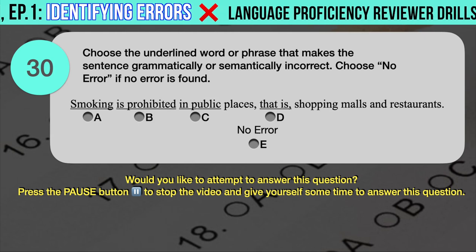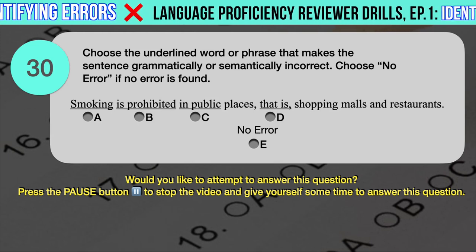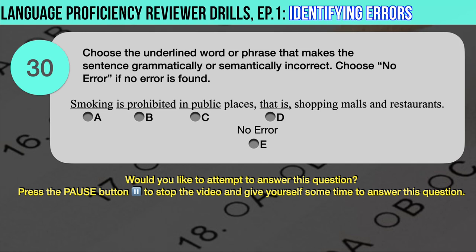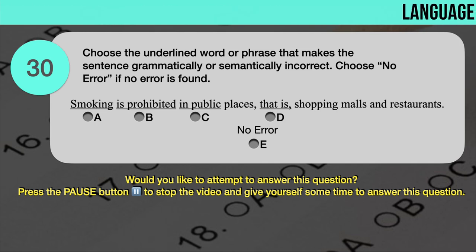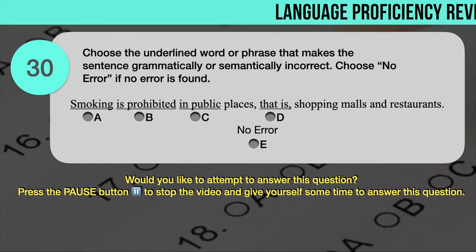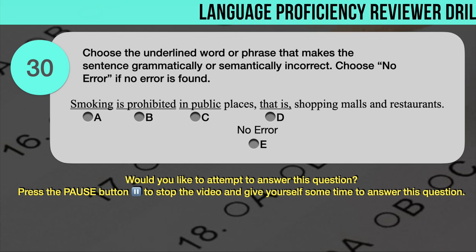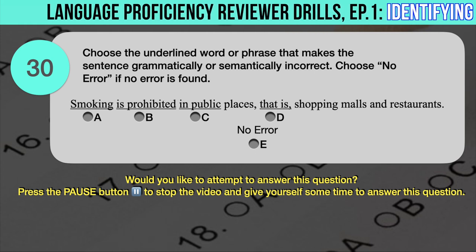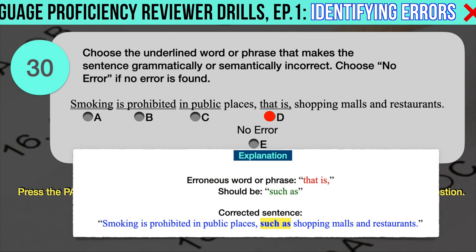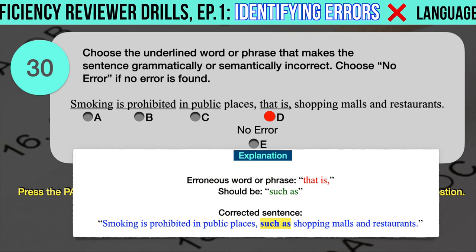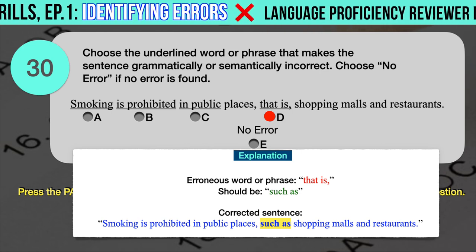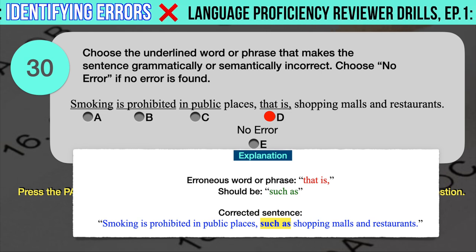Drill question number 30. 'Smoking is prohibited in public places, i.e., shopping malls and restaurants.' The underlined words are: A. Smoking, B. Prohibited, C. In public, D. That is. The correct answer is D. 'I.e.,' should have been 'such as.' 'I.e.' means 'that is' and is used to restate or clarify something already said, whereas 'such as' is used to introduce examples. Correct sentence: Smoking is prohibited in public places, such as shopping malls and restaurants.